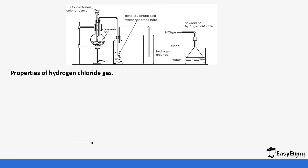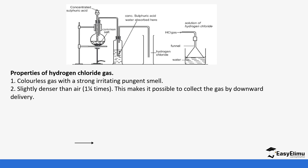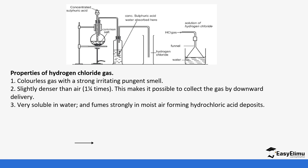Some properties of hydrogen chloride gas: it is colorless with an irritating pungent smell, which is very common with most acidic gases. When it reacts with water it forms hydrochloric acid, which causes that irritating feeling. It is slightly denser than air, which means it can be collected by downward delivery or upward displacement of air. It is very soluble in water and fumes strongly in moist air, forming hydrochloric acid deposits.